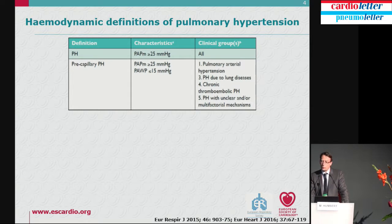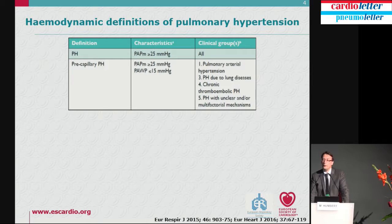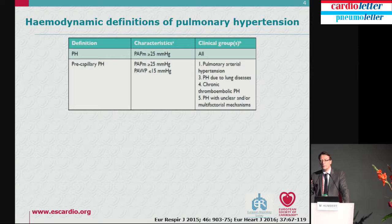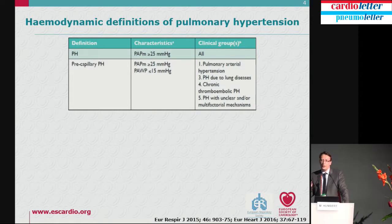Another important point is that we have a normal value of mean PAP of 14 mmHg, with a standard deviation of 3 mmHg. So between 14 and twice the standard deviation — 14 plus 6, which is 20 — you have a normal value. Between 21 and 25, there is a gray zone of borderline values, which are not defining pulmonary hypertension but should be recognized as possibly abnormal.